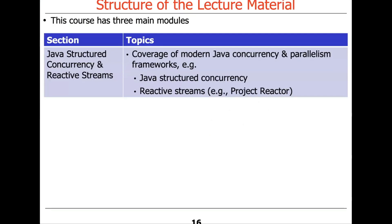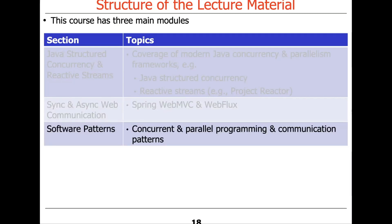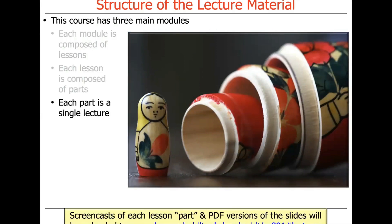Let's talk briefly about how the lecture material is going to be structured. There are three main modules we're going to bounce around with in the course. The first is on structured concurrency and reactive streams — we'll also cover Java streams for background. We'll spend a lot of time with Spring Web MVC and Spring Web Flux, starting right at the beginning. Typically we have a bunch of lessons, each lesson is composed of parts, and each part is a single lecture. I'm going to take screencasts of each part along with PDF slides and upload them to the link at the bottom of the slides. You can find where the lectures are located on my website, which is also linked in the Piazza posting.